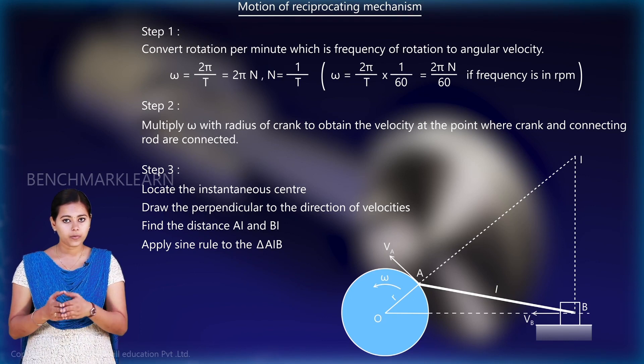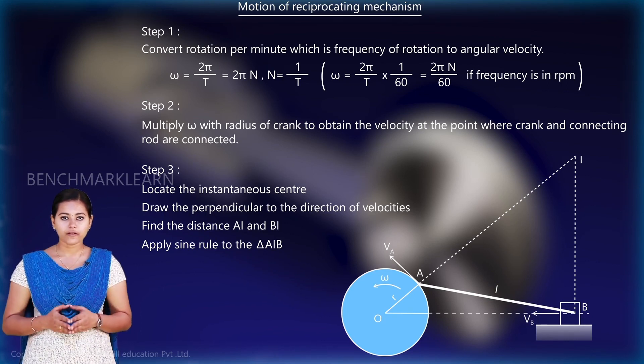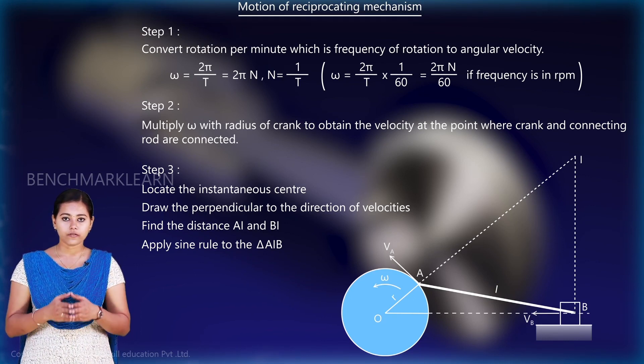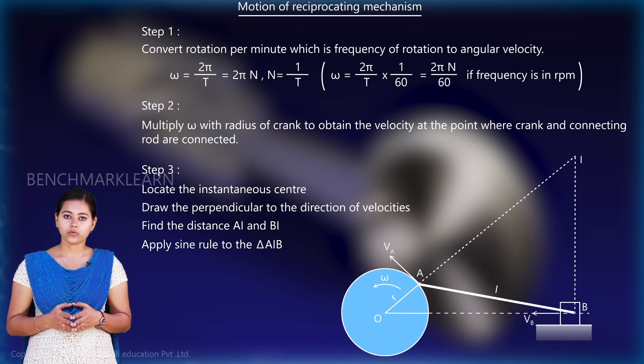We will also find all the interior angles of triangle AIB and then apply sine rule. From this, we will obtain the values of AI and BI.